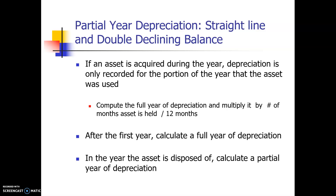In our examples for straight line, double declining balance, and units of production, I used the example of a truck that was bought on January 1st, so we were calculating a whole year of depreciation in year one. However, companies don't go out on the first day of their fiscal year and buy all the assets they need for the year. They buy assets all throughout the year, so in their first year, if they didn't hold the asset for the whole year, they can't take a whole year of depreciation.